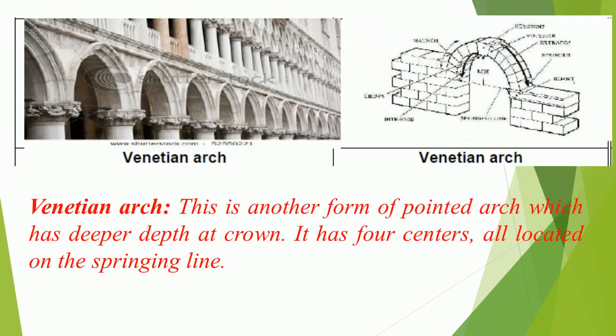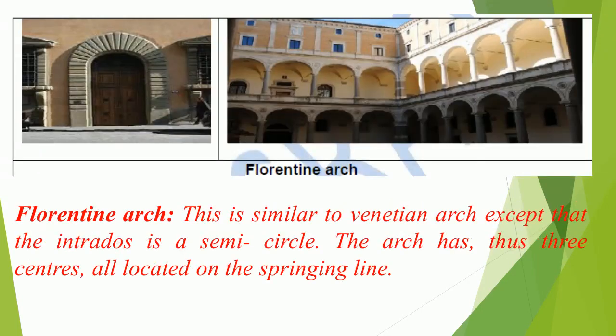Venetian arch is another form of pointed arch which has a deeper depth at the crown. It has four centers, all located on the springing line. Florentine arch is similar to the Venetian arch except that the intrados is a semi-circle. The arch thus has three centers, all located on the springing line.